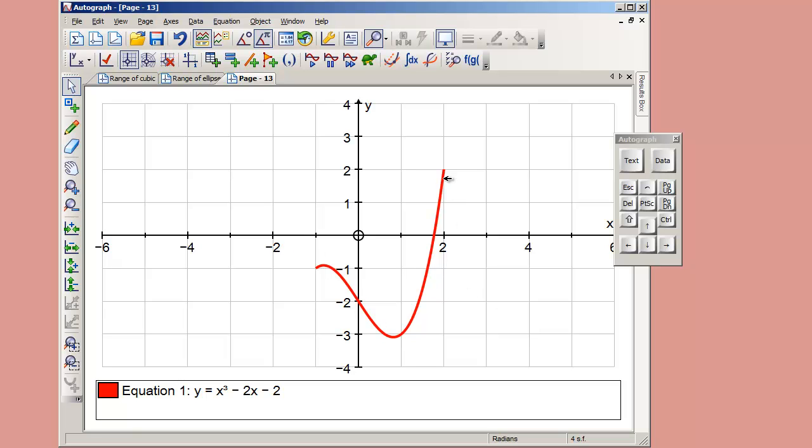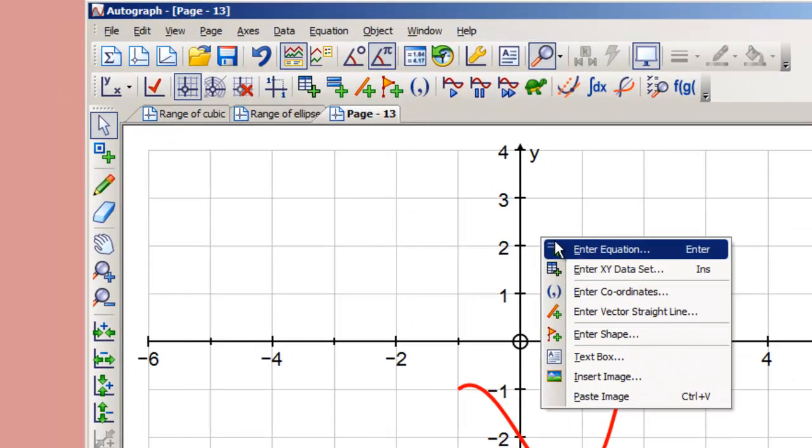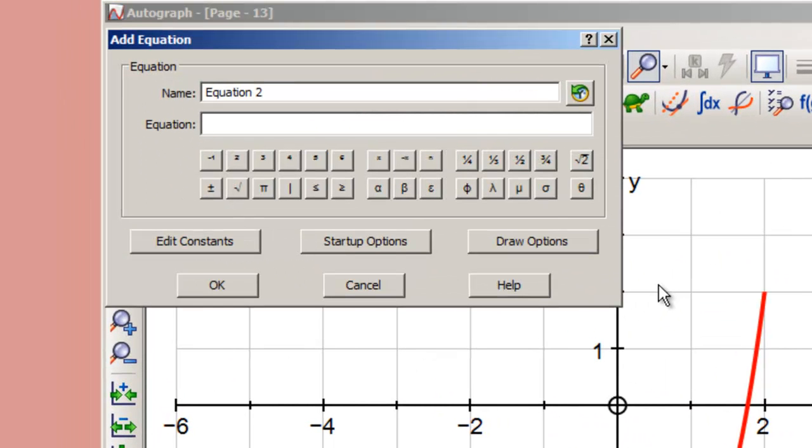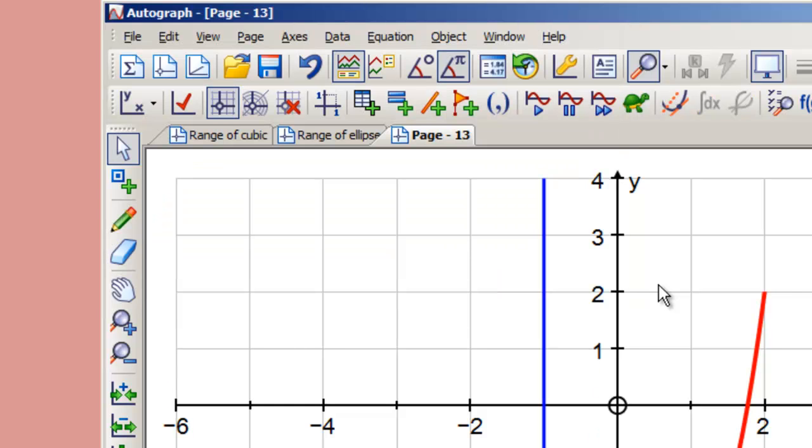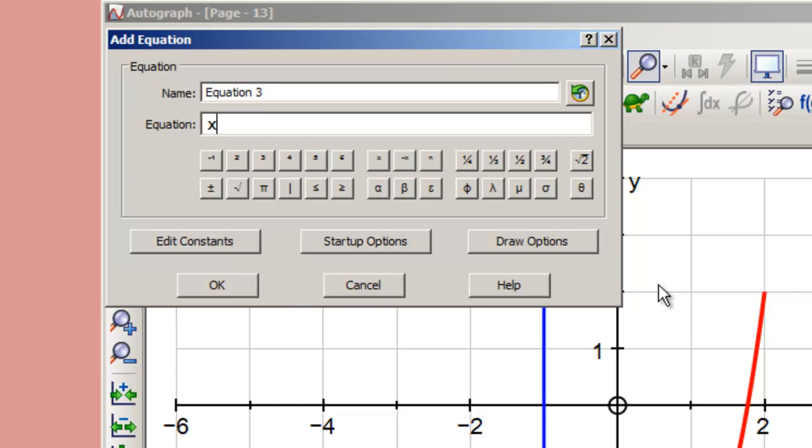There's the function we're talking about. It has a maximum here and a minimum here, so the range is going to be from this minimum point to this point. I think it would be useful to enter the limits of the domain as equations of x, so let's enter x equals minus 1 and x equals 2.